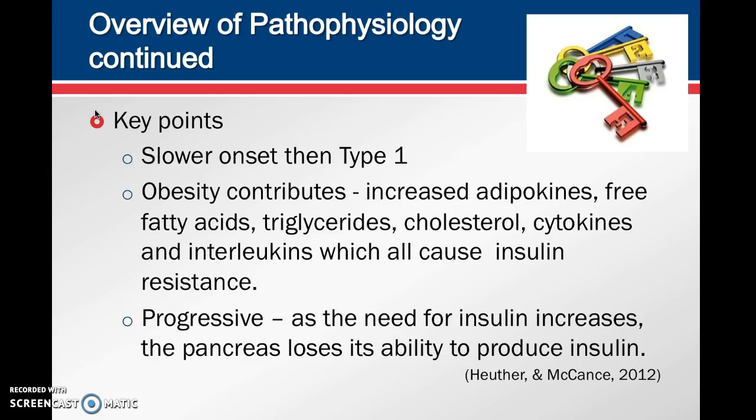Some key points about this disease: it has a slower onset than type 1 diabetes, so sometimes it's not picked up right away. Obesity contributes significantly — increased adipokines, free fatty acids, triglycerides, cholesterol, cytokines, and interleukins all cause insulin resistance. The disease is progressive; as the need for insulin increases, the pancreas loses its ability to produce insulin, so quite often these patients will eventually end up on insulin.